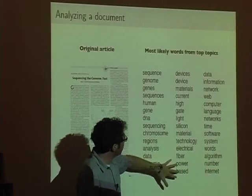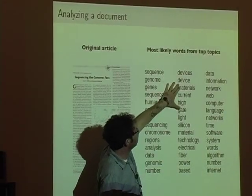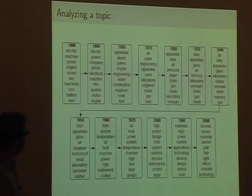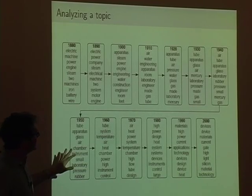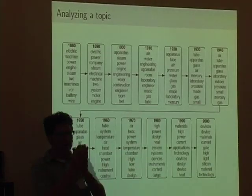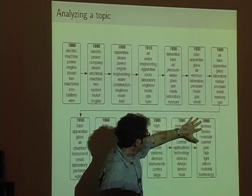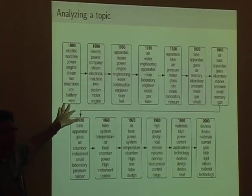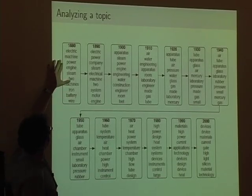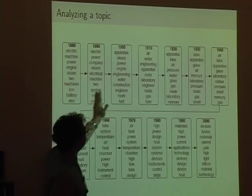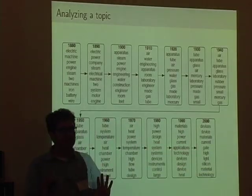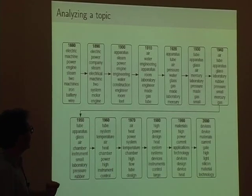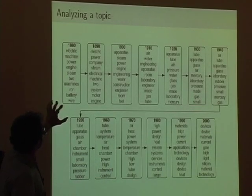We can take topic 35 — which in year 2000 has words like device, devices, materials, current, gate — and ask what that distribution over words looked like over time. Looking at the top 10 words at each decade, going back in time you can see the model has captured something salient: it starts by talking about electric, machine, power, engine, steam, iron, battery, and through time ends up talking about device, devices, materials, current, gate. The way one talks about machines in 1880, one talks about devices and silicon and technology in 2000.